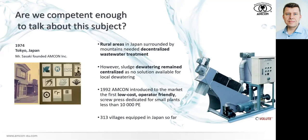Are we competent enough to talk about this subject? I hope so. Amcon was established in 1974 in Tokyo, Japan. During the first years of operation it was a company maintaining and operating wastewater treatment plants in the region. Sludge handling was always — and always will be — a very important part of wastewater treatment plant operation. In those days, there was really no suitable technology for small wastewater treatment plants to reduce the amount of sludge for disposal — something small scale, easy to use, easy to set up, easy to operate, with low consumption of electricity and rinsing water.